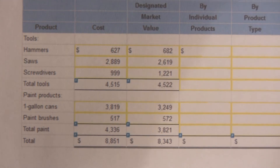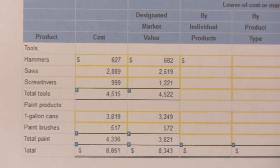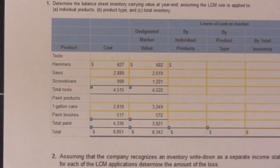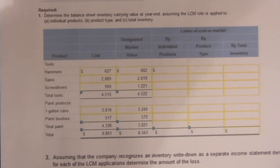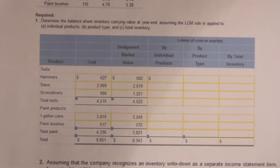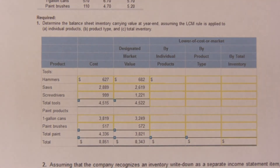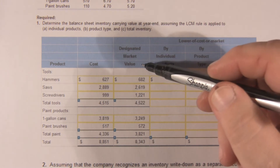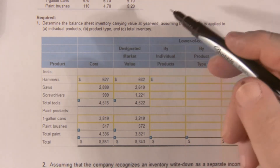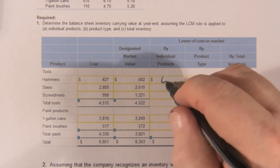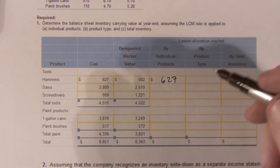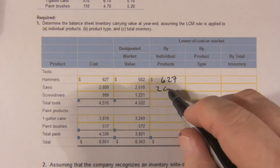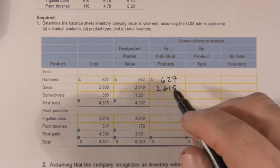Now it asks us to apply the lower of cost or market rule by product, by type, and by total inventory. So let's go through and fill in our chart. We're going to pick the lower of cost or designated market. So this would be 627, this would be 2619, and this would be 999.